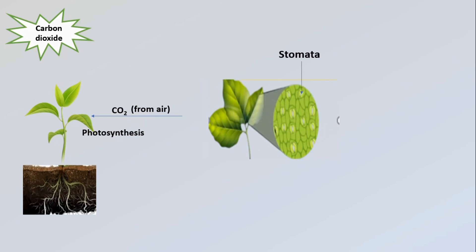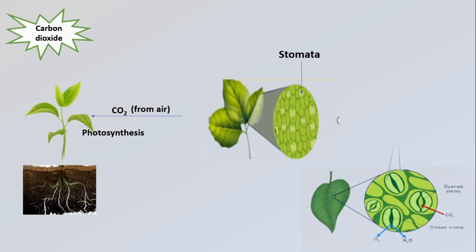The second requirement is carbon dioxide. Green plants take carbon dioxide gas from the air for carrying out photosynthesis. Tiny pores called stomata are present on the underside of the leaves. These pores are surrounded by guard cells which control the opening and closing of stomata. The carbon dioxide gas enters the leaves through stomata.